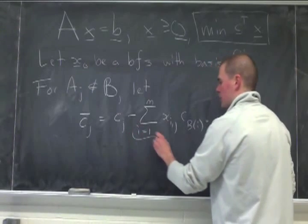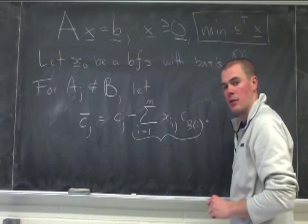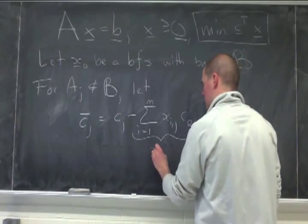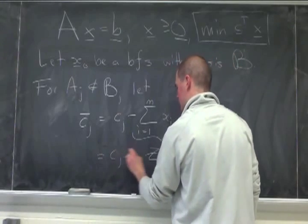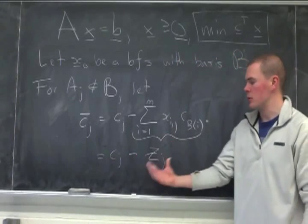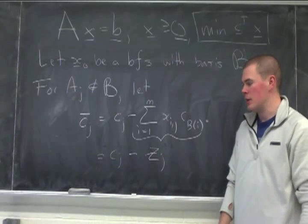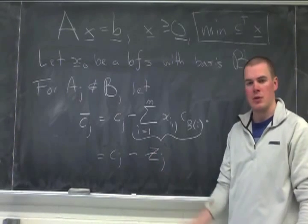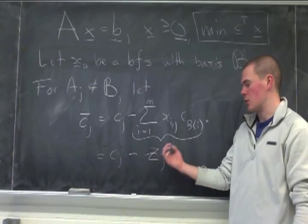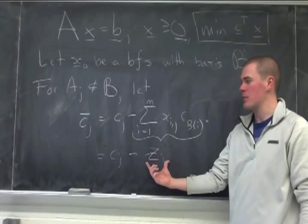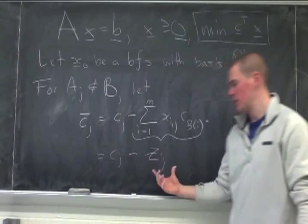This term here is so important we call it, we have our own name for it, and it's called zj. So this term here we'll just refer to as zj. And in general, the vector of all z1s through zn, every n of them, because one for every j, this number will be important.